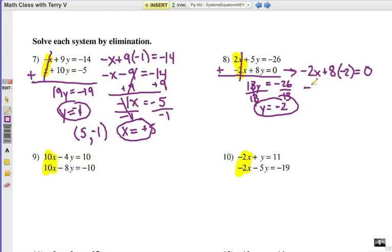Negative 2x minus 16 equals 0. We're going to add 16 to each side, and then we will get negative 2x equals positive 16. Divide each side by negative 2, and that will give me my answer of negative 8.